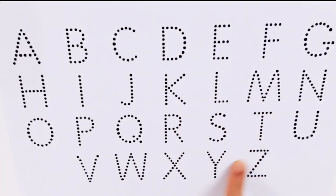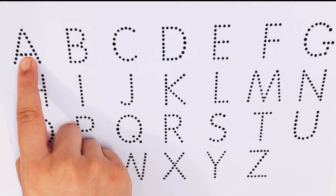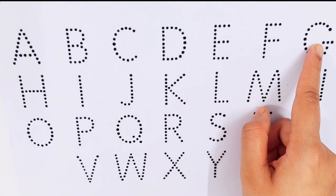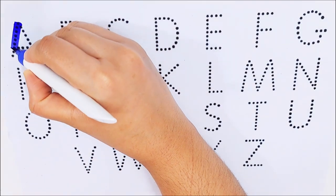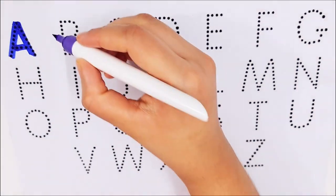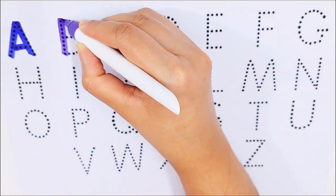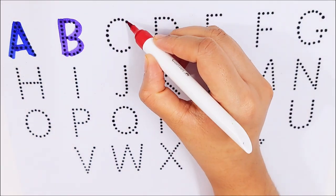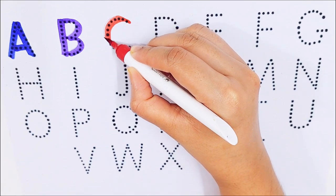Today we'll try to learn some alphabets. A, B, C, D, E, F, G. A for animals, B for birds, C for cherry.